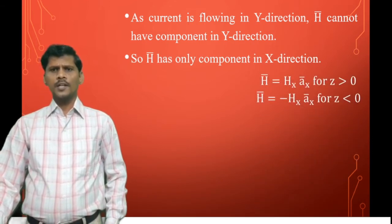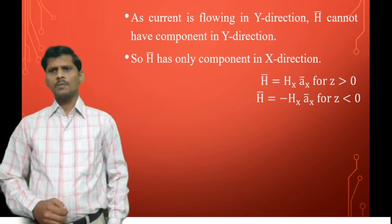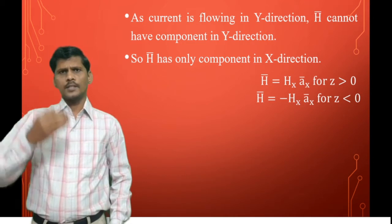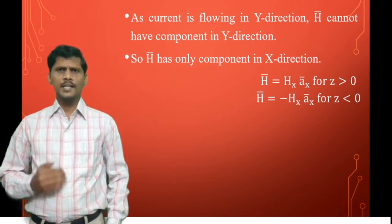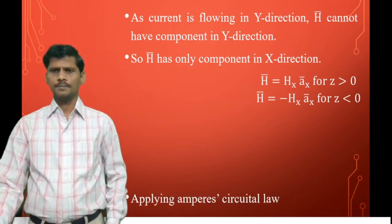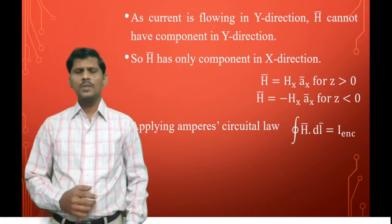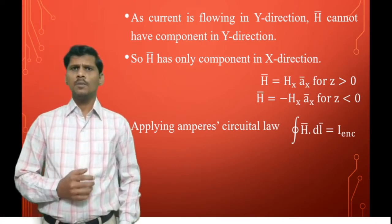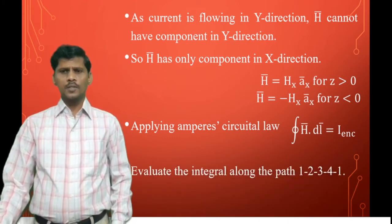Therefore, along the x-direction, the magnetic field intensity H̄ = Hx·āx for z > 0 (positive direction), and H̄ = −Hx·āx for z < 0 (negative direction, below the XY plane). Applying Ampere's circuital law: the closed line integral of H̄·dl̄ is equal to the enclosed current.